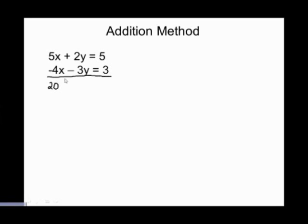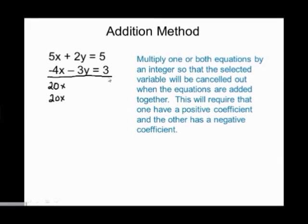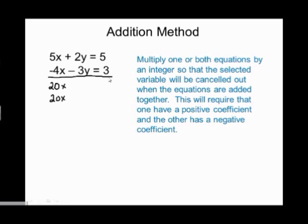So I want to have 20x in each equation. I'll multiply one or both equations by an integer — a positive or negative whole number — so that the x terms cancel when the equations are added together. I need positive 20x in one equation and negative 20x in the other. This will require multiplying both equations by different integers. I'll put the negative 20x on the bottom equation.